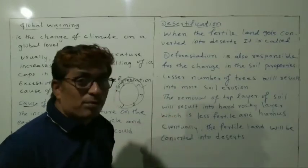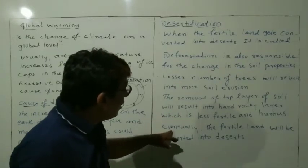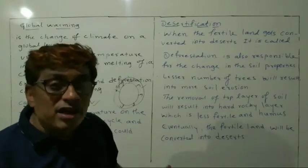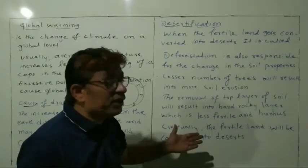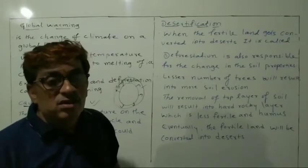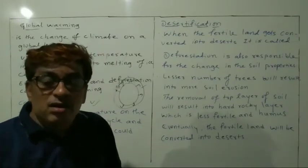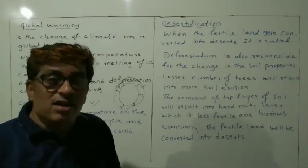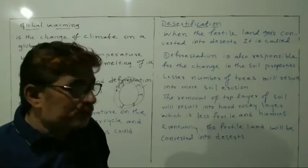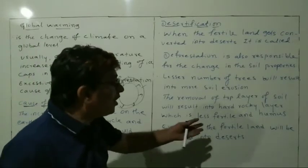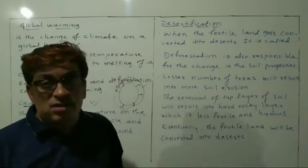These are the problems arising from deforestation. Eventually — that means ultimately — the fertile land will be converted into deserts. The fertile land means the soil that has the capacity to grow plants and crops, and this will be converted into deserts.